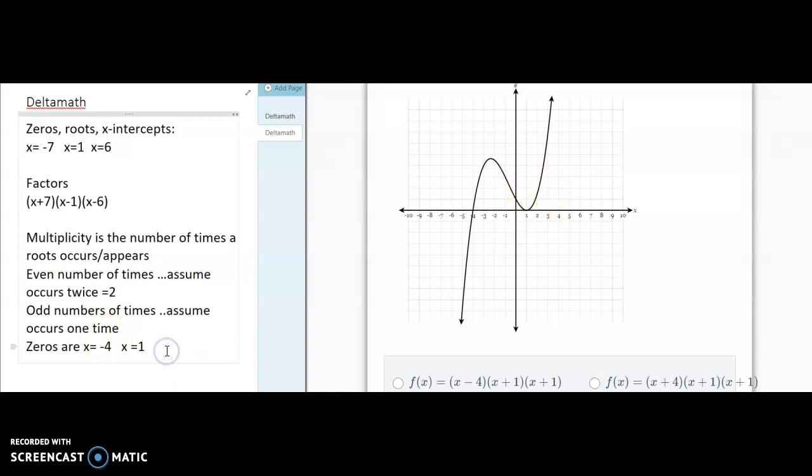So my zero is x equals negative 4. And because it crosses through the graph, that means that the function goes through the x-axis. That has a multiplicity of 1. So I only see it one time. I only see it one time.